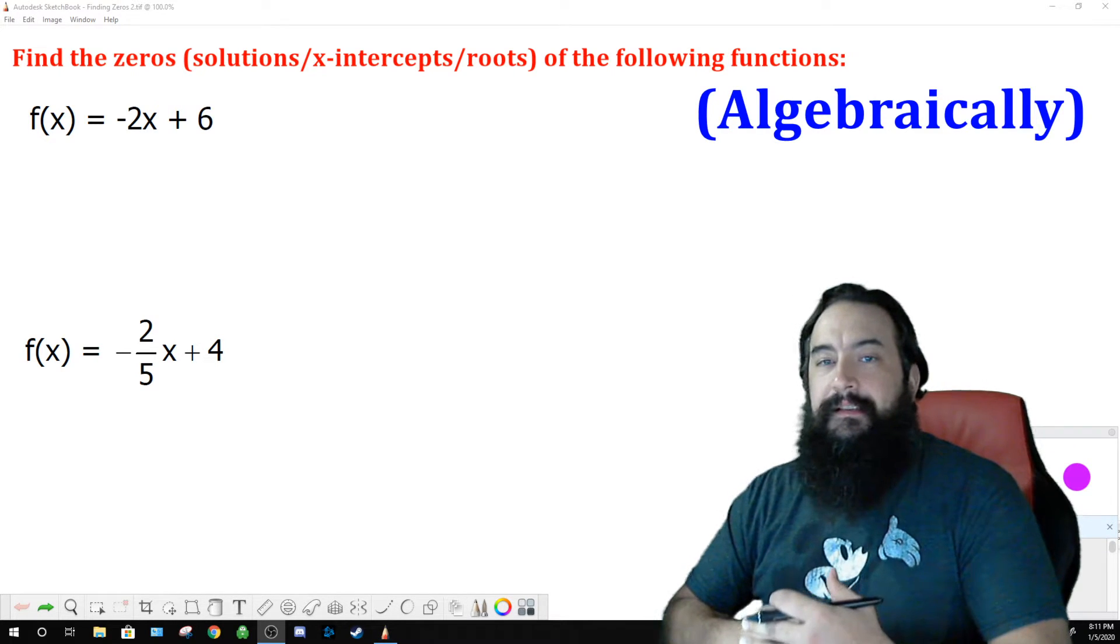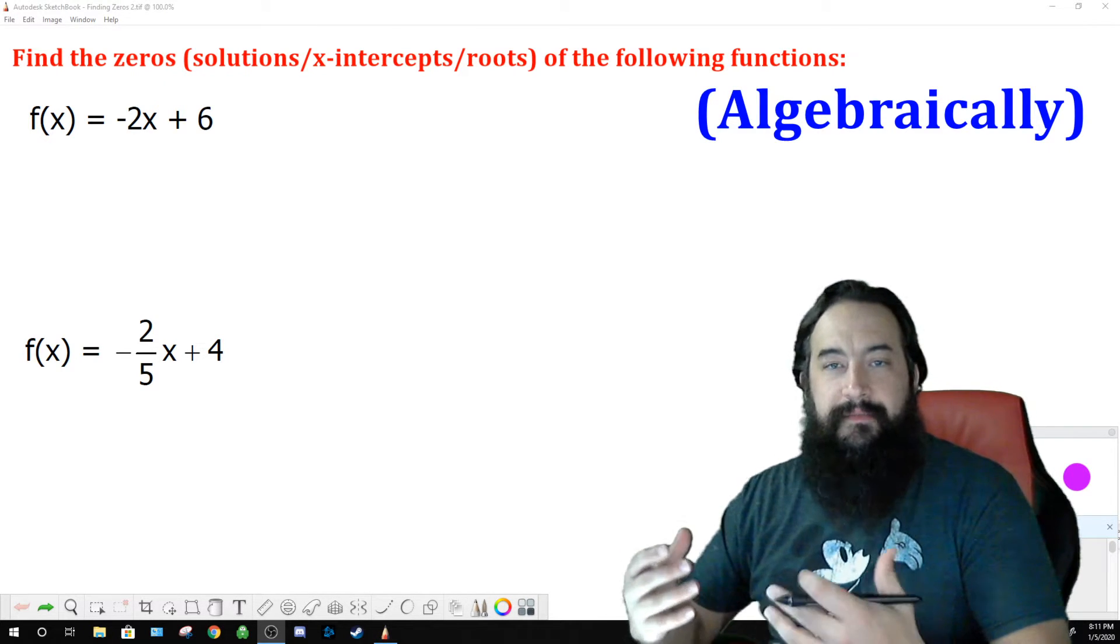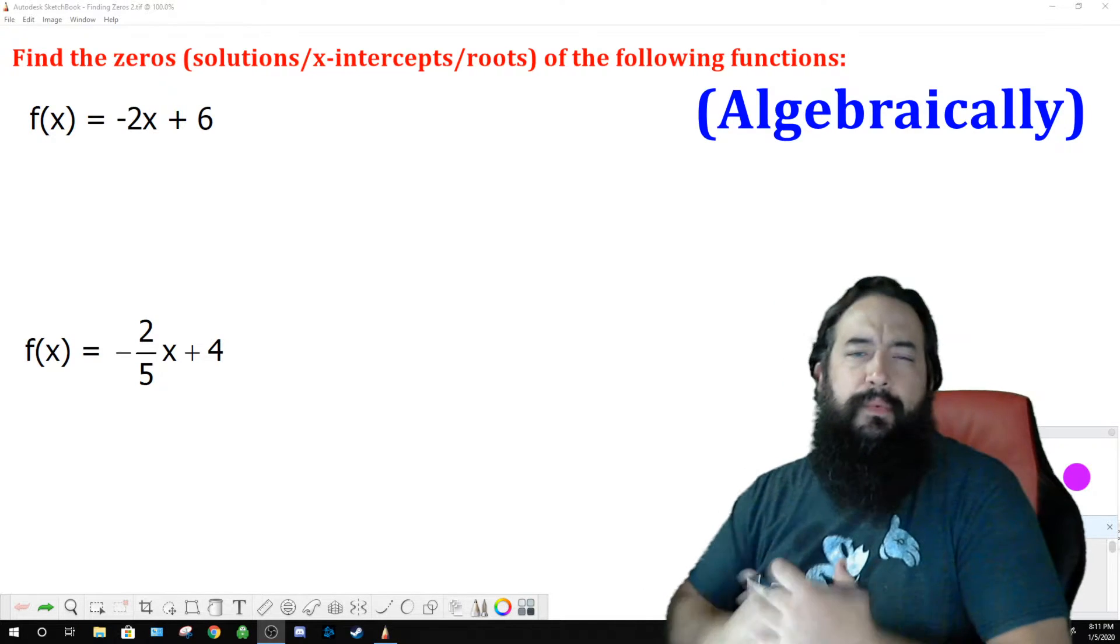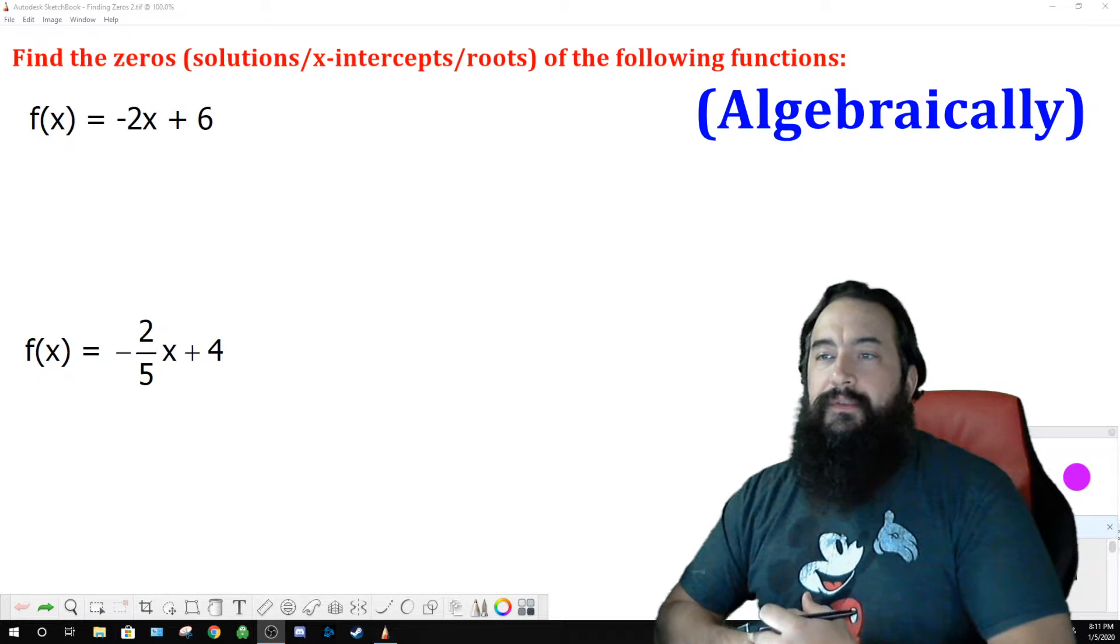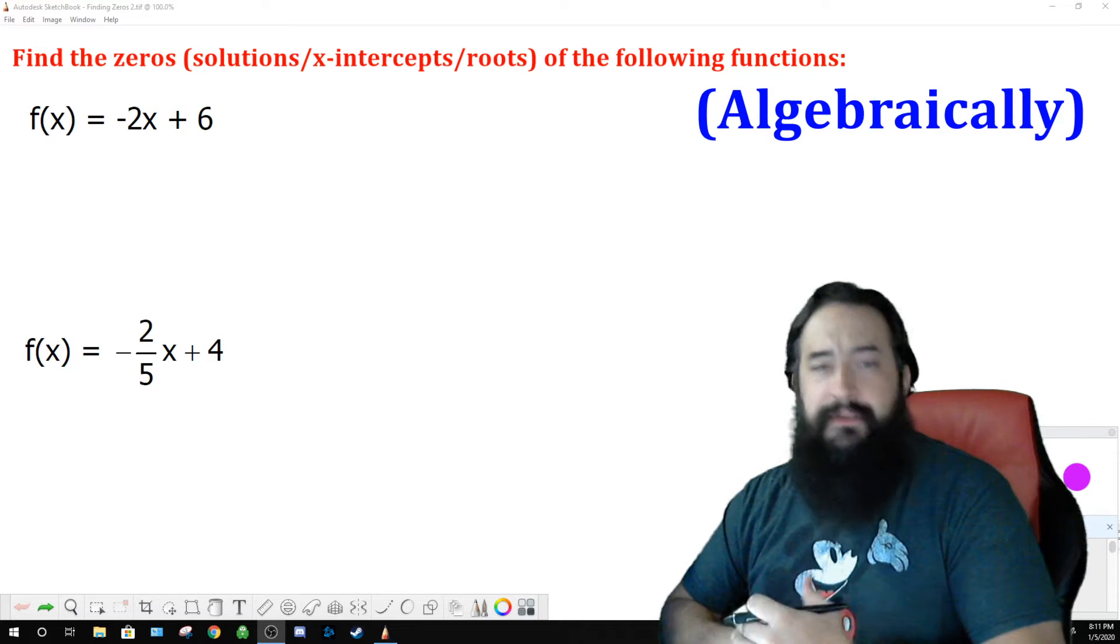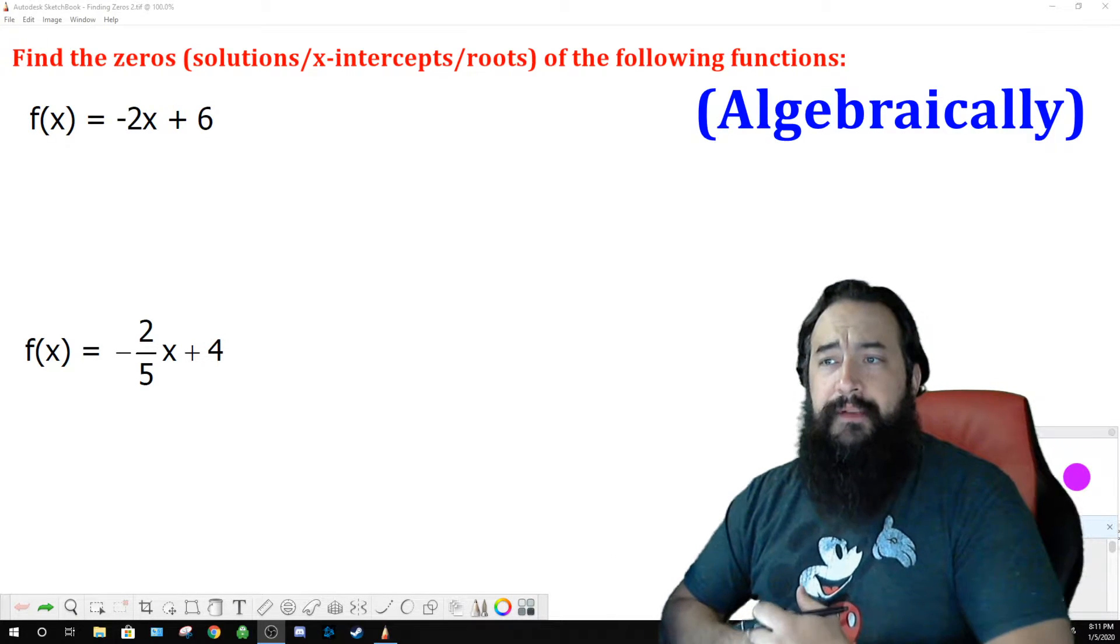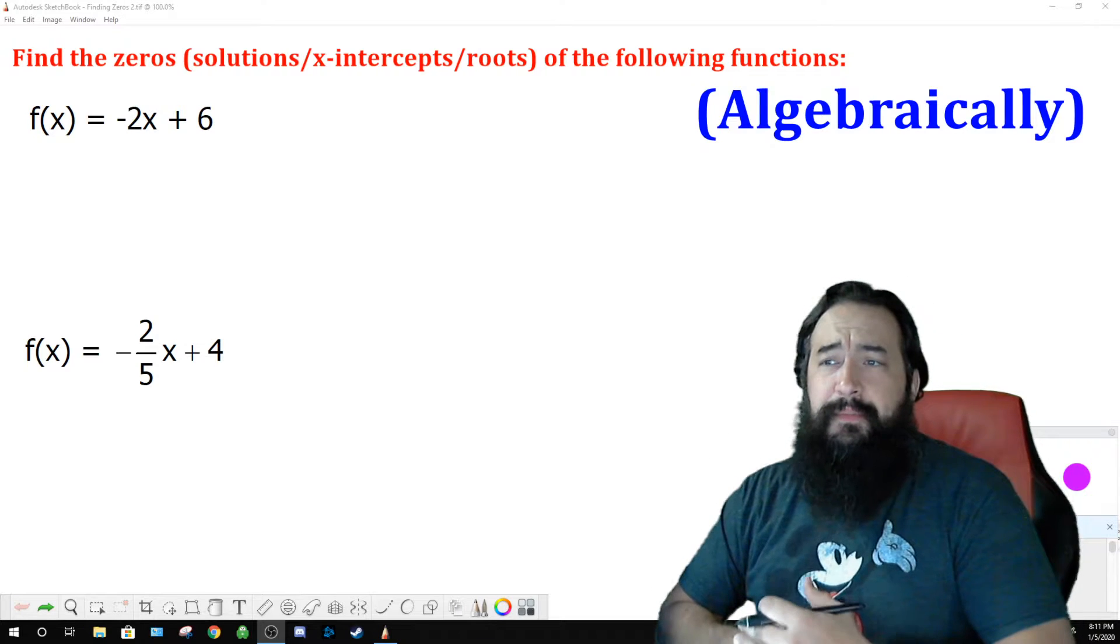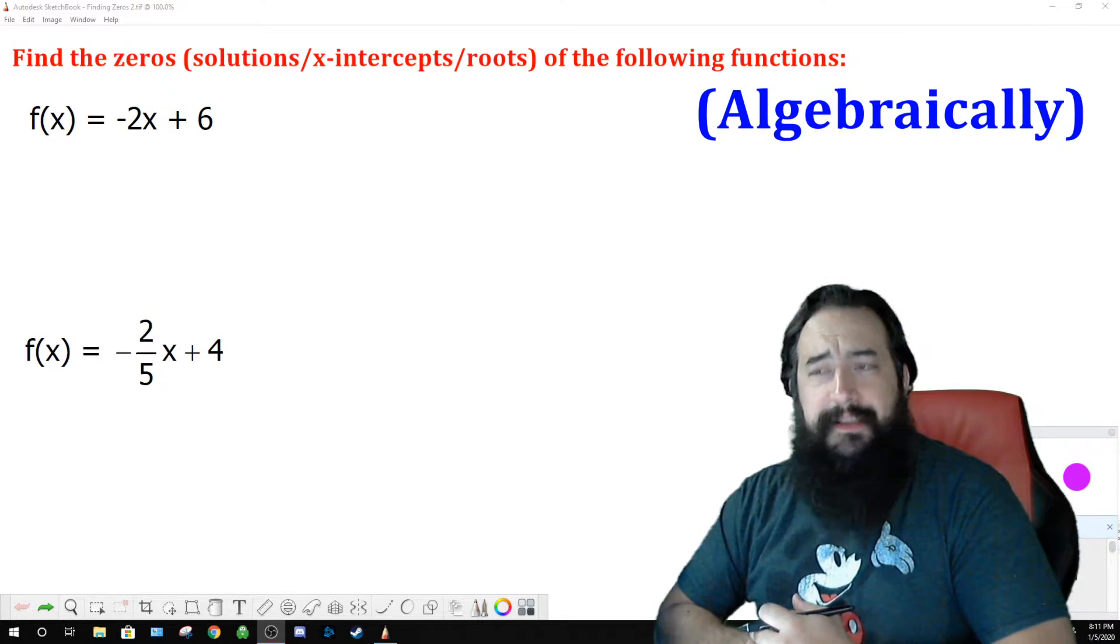We're going to use that fact to set these up to solve them and find out the zeros, or solutions, or x-intercepts, or roots, whatever you want to call them. We have f(x) is equal to negative 2x plus 6. This is a linear function, and we want to figure out where this crosses the x-axis. If you're pretty good with linear functions, you could probably figure it out just by looking at it and working some stuff out in your head.